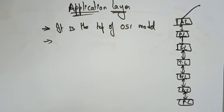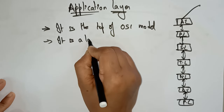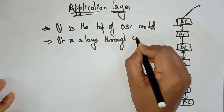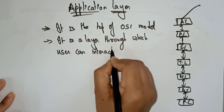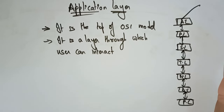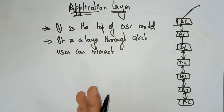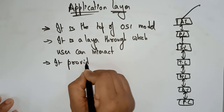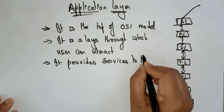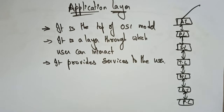This application layer is the topmost layer of the OSI model and it is a layer through which the user can interact. So if you want to interact with the computer network such as the OSI model, you interact with the topmost layer only, because the application layer can send data in a user-readable format. It is a layer through which the user can easily interact, and it also provides services to the user.